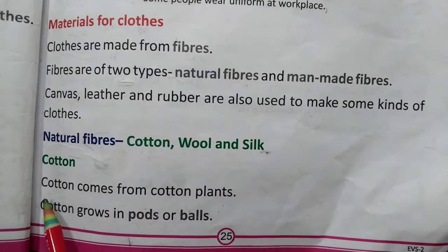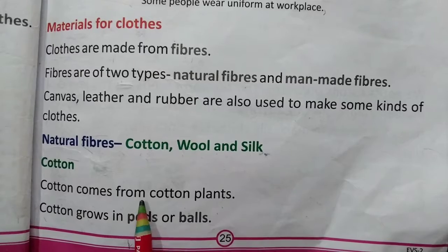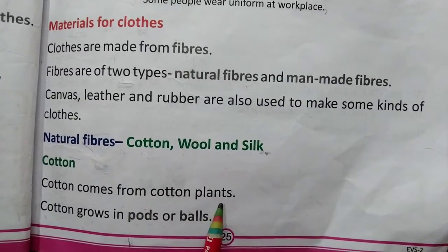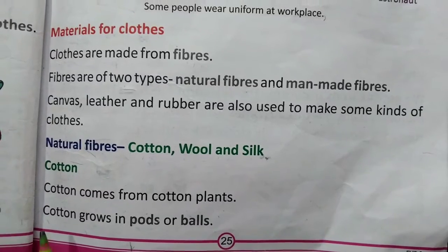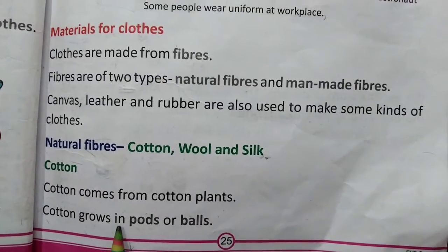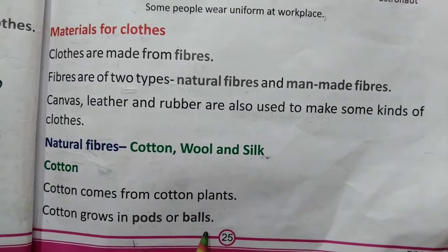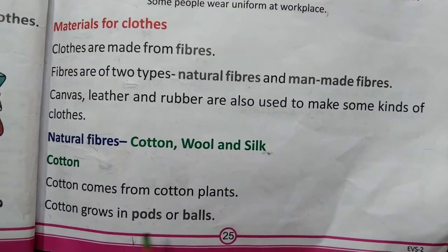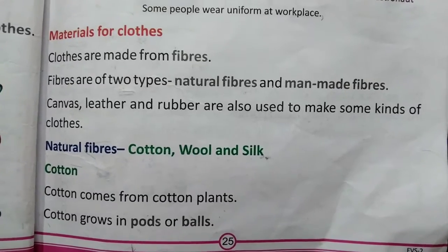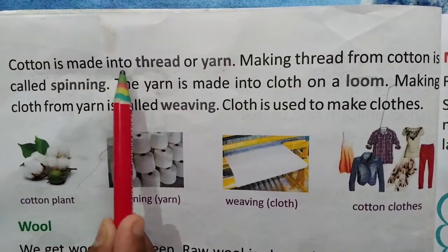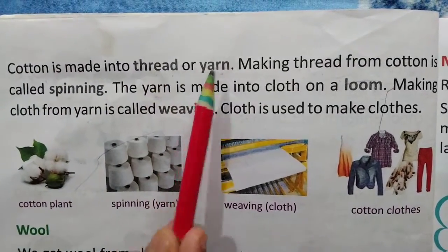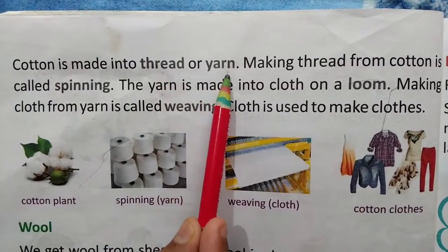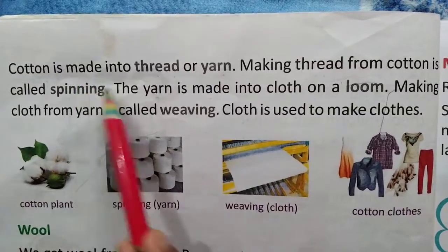Cotton, kappas. Cotton comes from cotton plants. Kappas, kappas ki paudho se aata hai. Cotton grows in pods or balls. Kappas phaliyon ya gendho mein ugta hai. Cotton is made into thread or yarn. Souti dhaga ya suit mein banaaya jata hai.